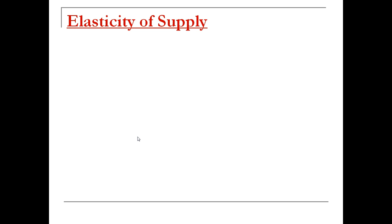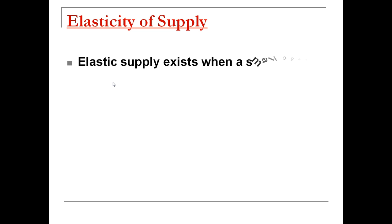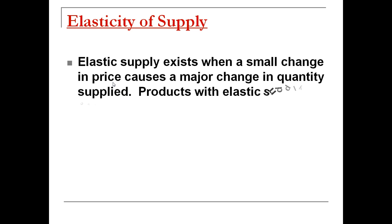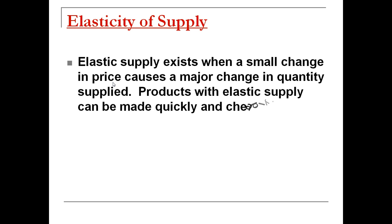Now we're going to look at elasticity of supply, which shows how responsive supply is to changes in price. Elastic supply exists when a small change in price causes a major change in quantity supplied — meaning price greatly affects quantity supplied. Products with elastic supply can be made quickly and cheaply, so once suppliers see they can make money off something, they're going to start making a lot of it.